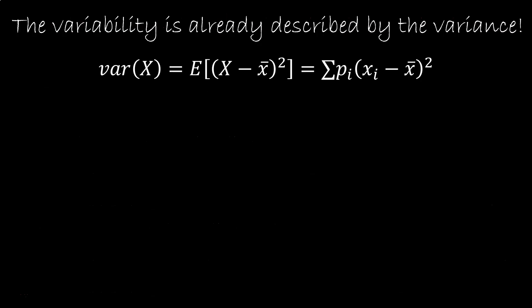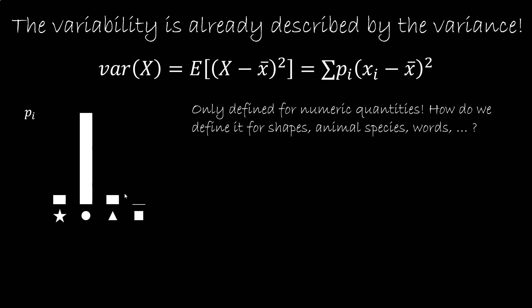Okay, so we have a distribution, whatever the kind. And we ask, what is the variability of the elements? How are they different from each other? And some will say, we already have a way to do that. It's the variance. You calculate the expectation of the square of the difference from the mean. But look, we have a distribution over shapes. What is the average shape? How do you calculate the average shape? The problem is the variance only works for numeric quantities, things you can subtract, square, and sum. And not everything is a numeric quantity.